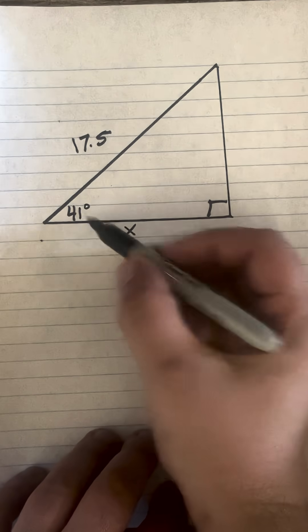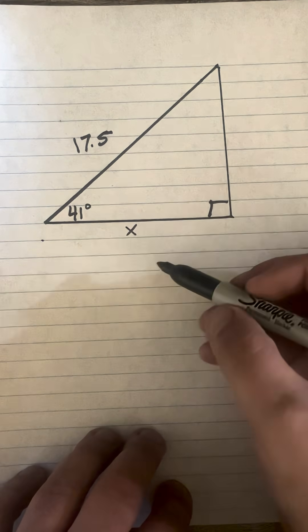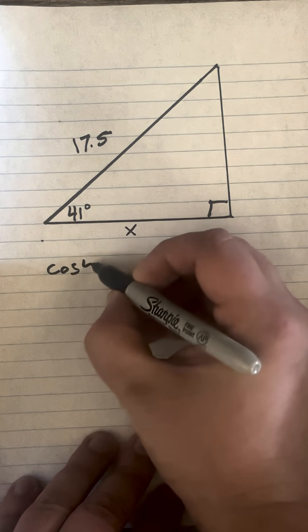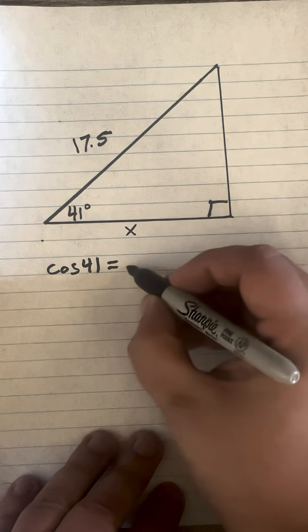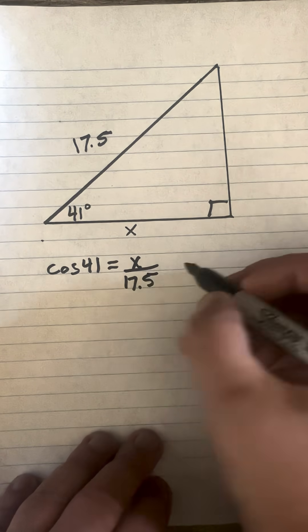Let's solve for x. We have an angle of 41 degrees and the sides we have are adjacent and hypotenuse. Adjacent over hypotenuse is going to be cosine, so cosine of 41 equals adjacent x over hypotenuse 17.5.